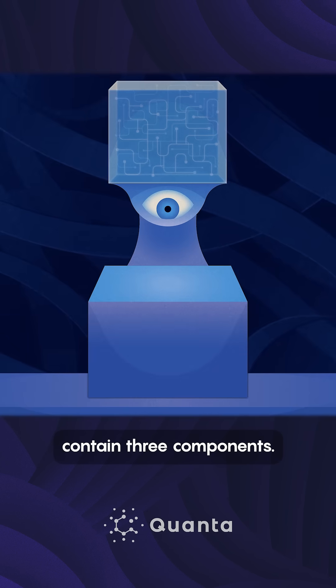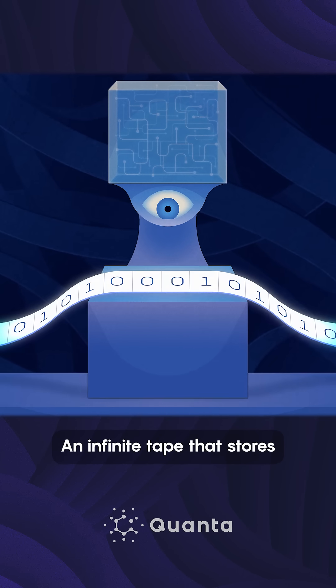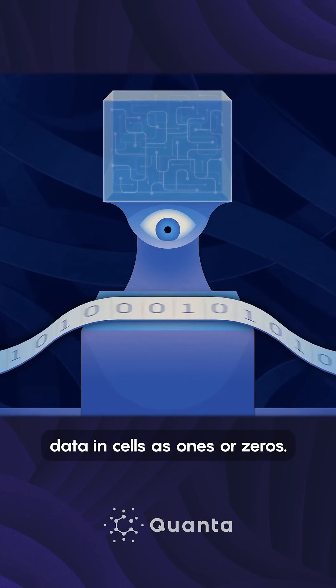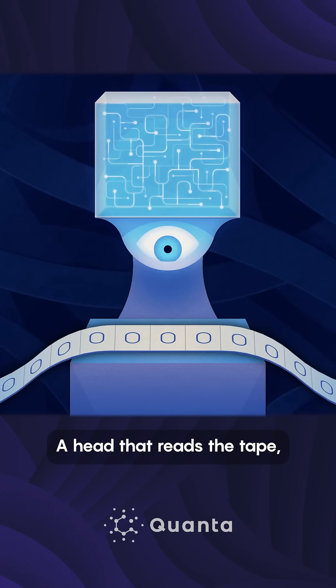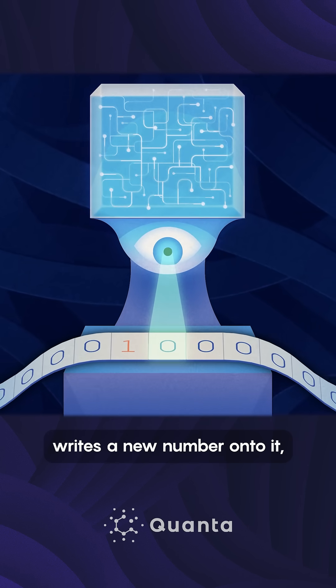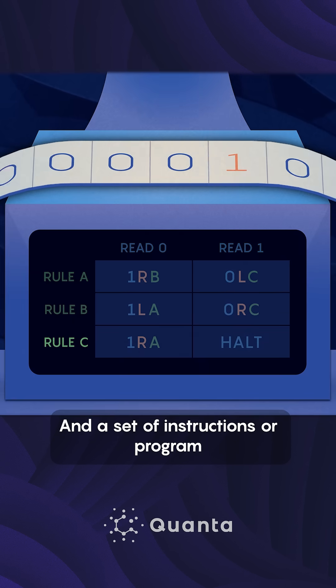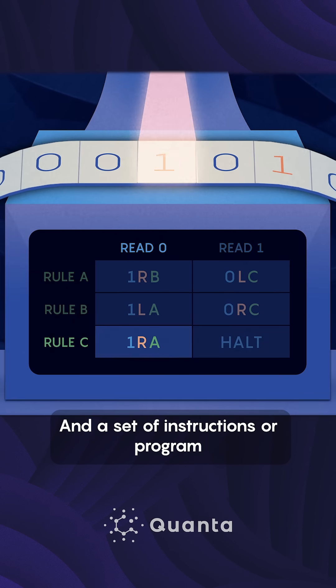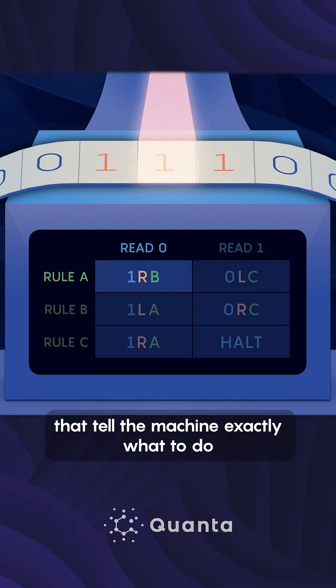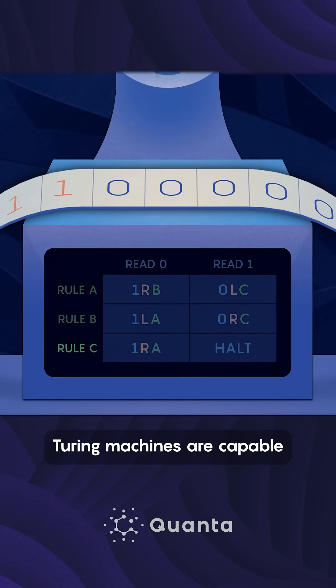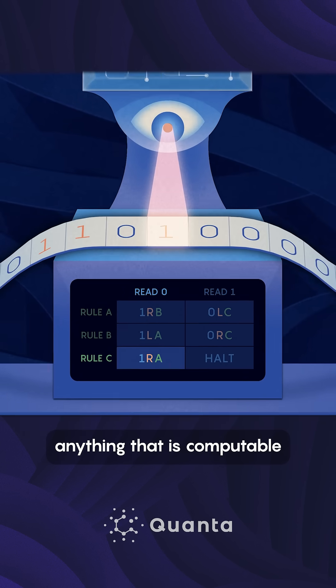All Turing machines contain three components: an infinite tape that stores data in cells as ones or zeros; a head that reads the tape, writes a new number onto it, and moves the tape left or right; and a set of instructions or program that tell the machine exactly what to do at each step. Turing machines are capable of computing anything that is computable by algorithms. By doing this very simple but esoteric set of instructions, you can do just as much as you can do with any other programming language.